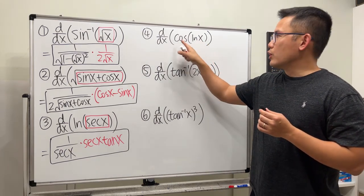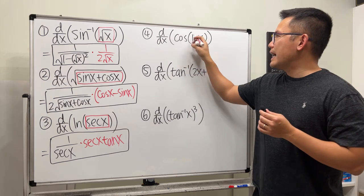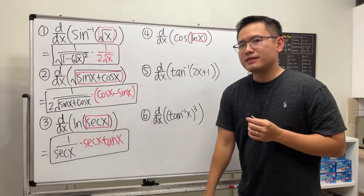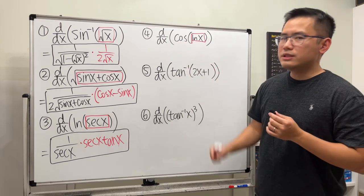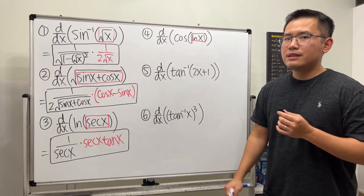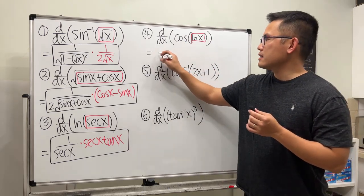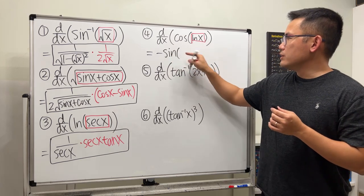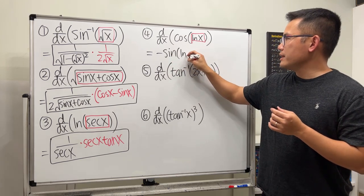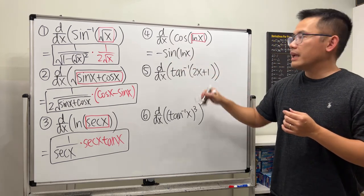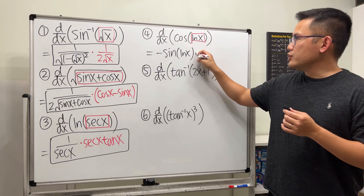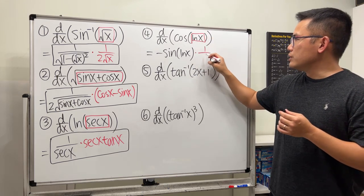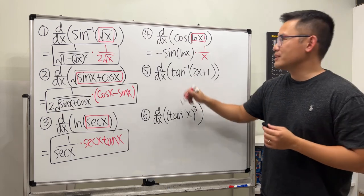Number four: cosine of ln x. Cosine is on the outside and ln x is inside the box. We differentiate cosine first and that's negative sine, maintaining whatever is in the box inside. Then use the chain rule — multiply by the derivative of ln x, which is 1 over x. That's it.